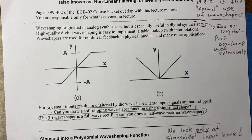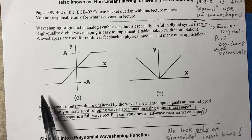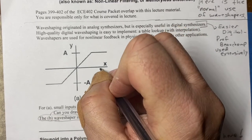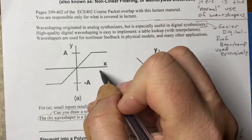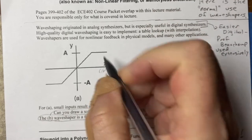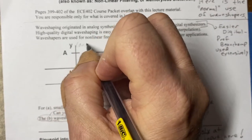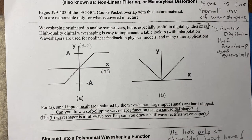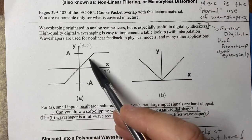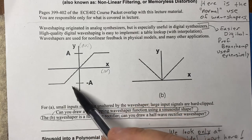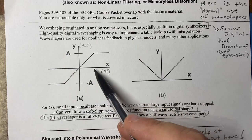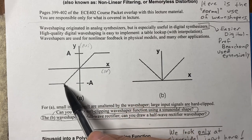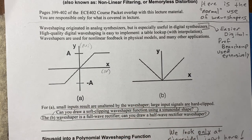I want to give two examples of wave shapers so you have an intuitive feeling for it. X here is an input into a lookup, and Y here is output. This here is a hard clipping function: in the linear region, the input equals the output, but once the input exceeds a certain value, the output no longer goes up — that's hard clipping. Same thing on the negative side.